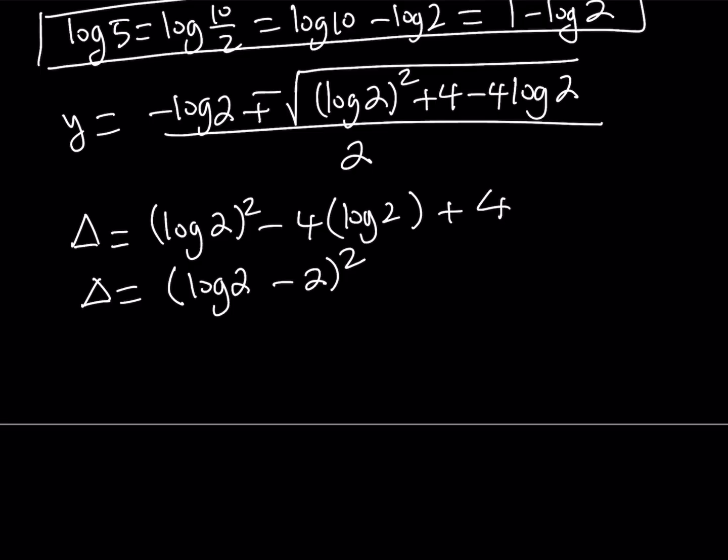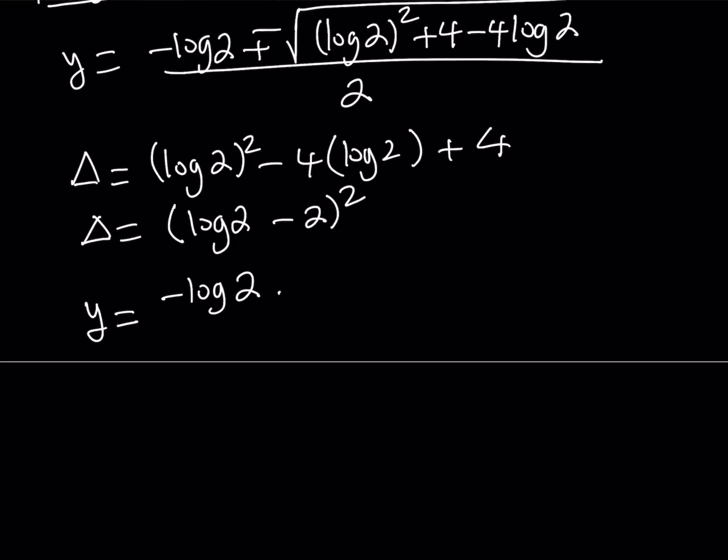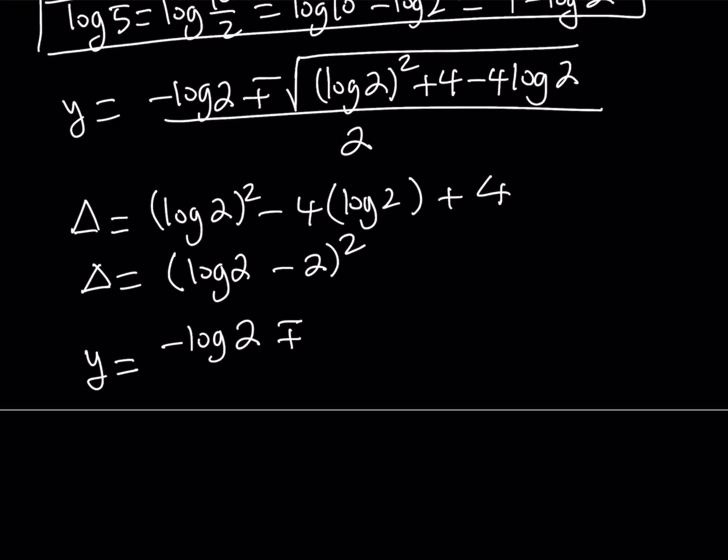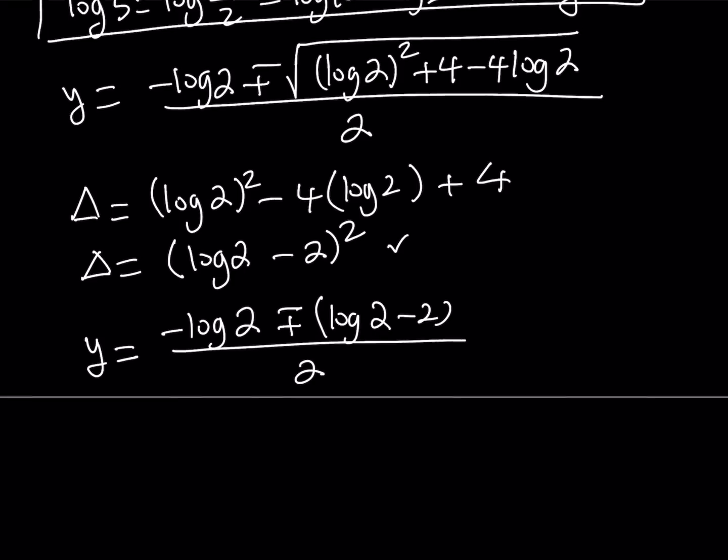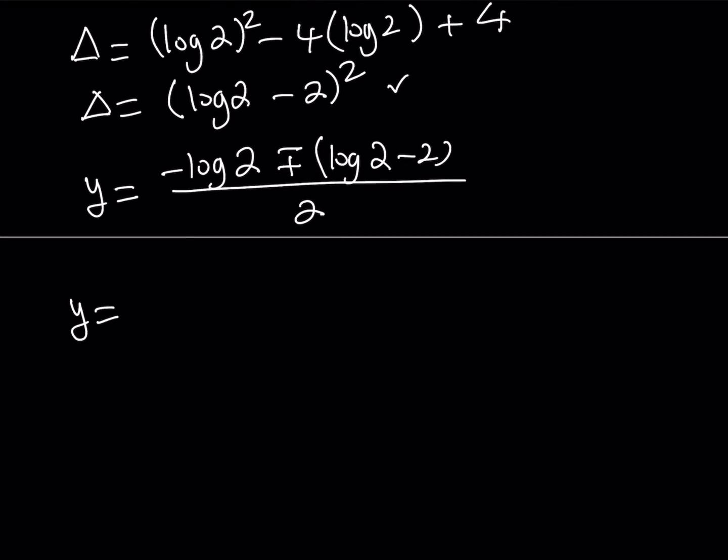That way we can simplify it. So from here, y can be written as negative log 2 plus minus, when you square root the discriminant, you're going to get plus minus log 2 minus 2, and all of that divided by 2. And then from here, if you split up the solutions, you're going to get negative log 2 plus log 2 minus 2 divided by 2. The log 2 is going to cancel out, and you're going to get y equals negative 1.